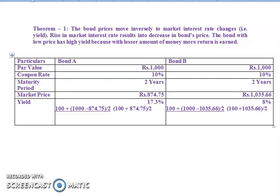This theorem can be understood by analyzing this table. Particulars: Bond A and Bond B. Par value for Bond A is Rs.1000, for Bond B it is Rs.1000. Coupon rate for Bond A is 10%, for Bond B it is also 10%. Maturity period for Bond A is 2 years, for Bond B it is 2 years. Market price for Bond A is 874.75, for Bond B it is 1035.66.